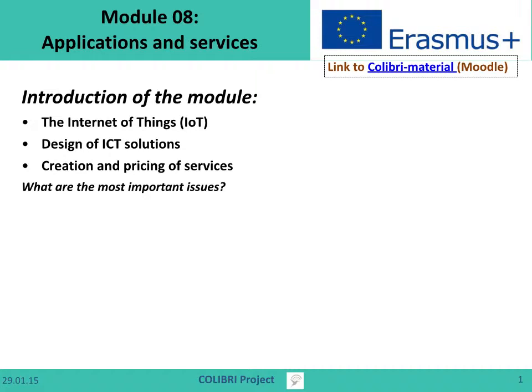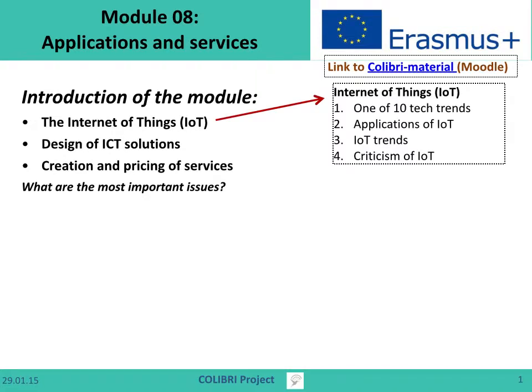The Internet of Things is the interconnected or usually identifiable embedded computing devices working within the existing internet structure. It's a services system of devices that go beyond the traditional machine-to-machine communication, including a lot of variety of protocols, domains, and applications. It's a kind of automation of all the daily components and devices we use and see around us.